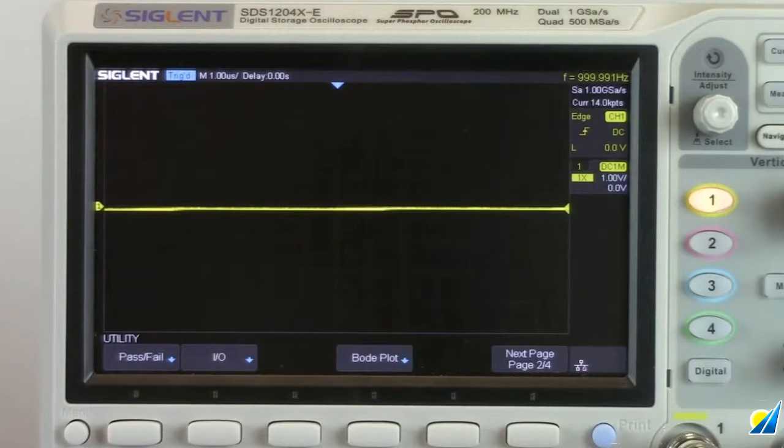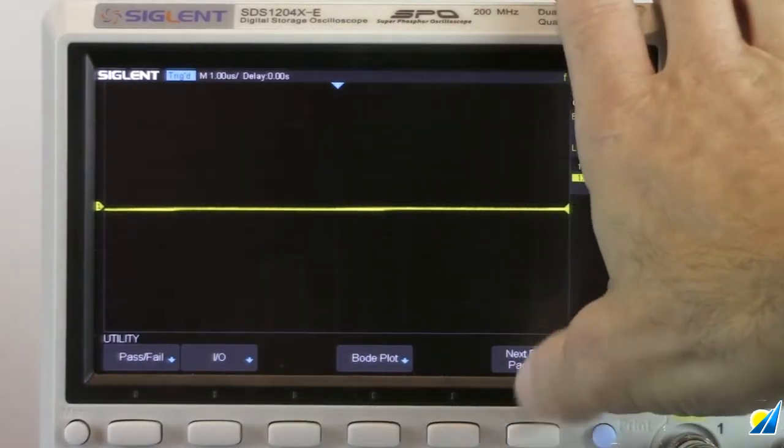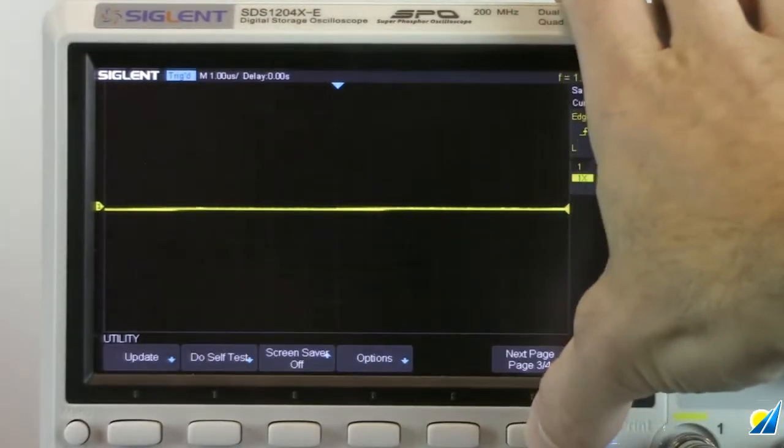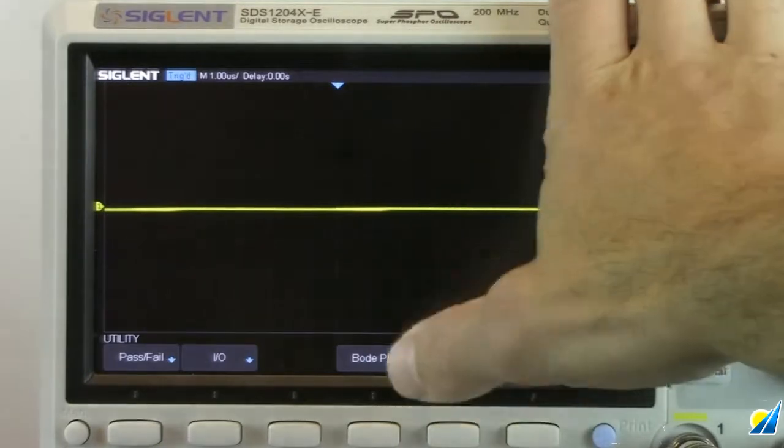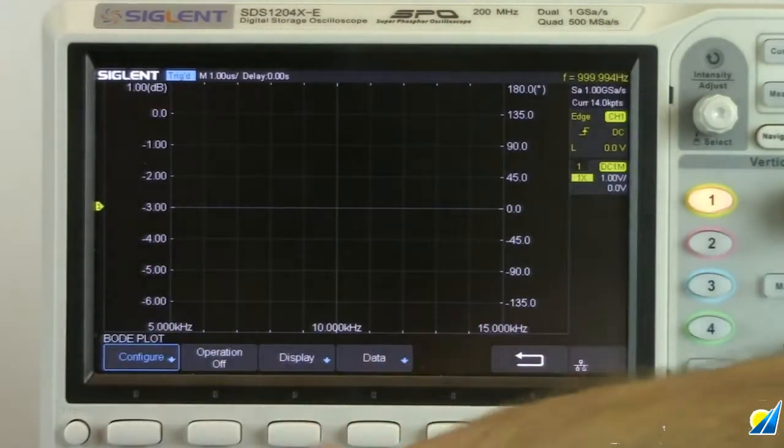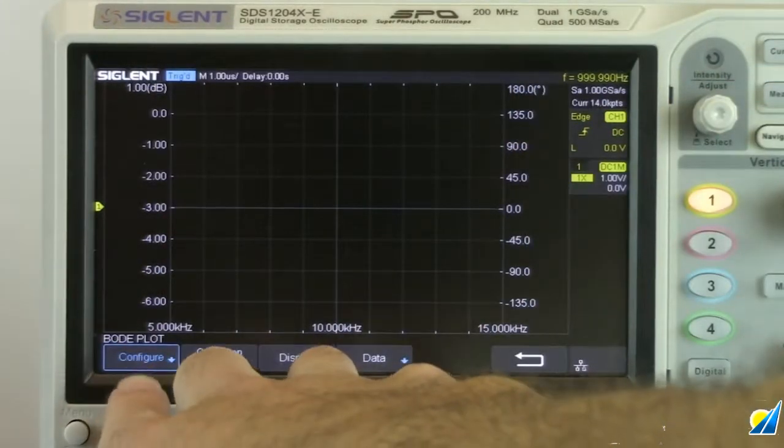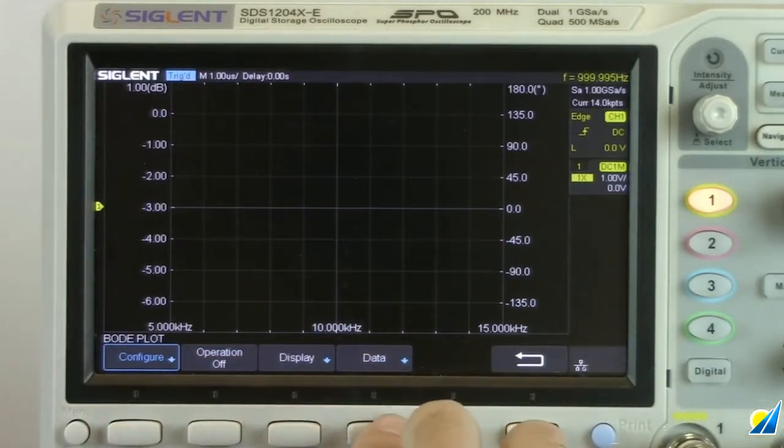Now that we've configured the SDG, we can move on to the oscilloscope and its configuration. We want to press utility and press the next page until we get to Bode plot. You can see it here, it's on page two. So we'll just cycle through and now we're back to Bode plot. Pressing Bode plot is going to change the display and give us another configuration menu. Here we've got configure, operation on and off, display and data.